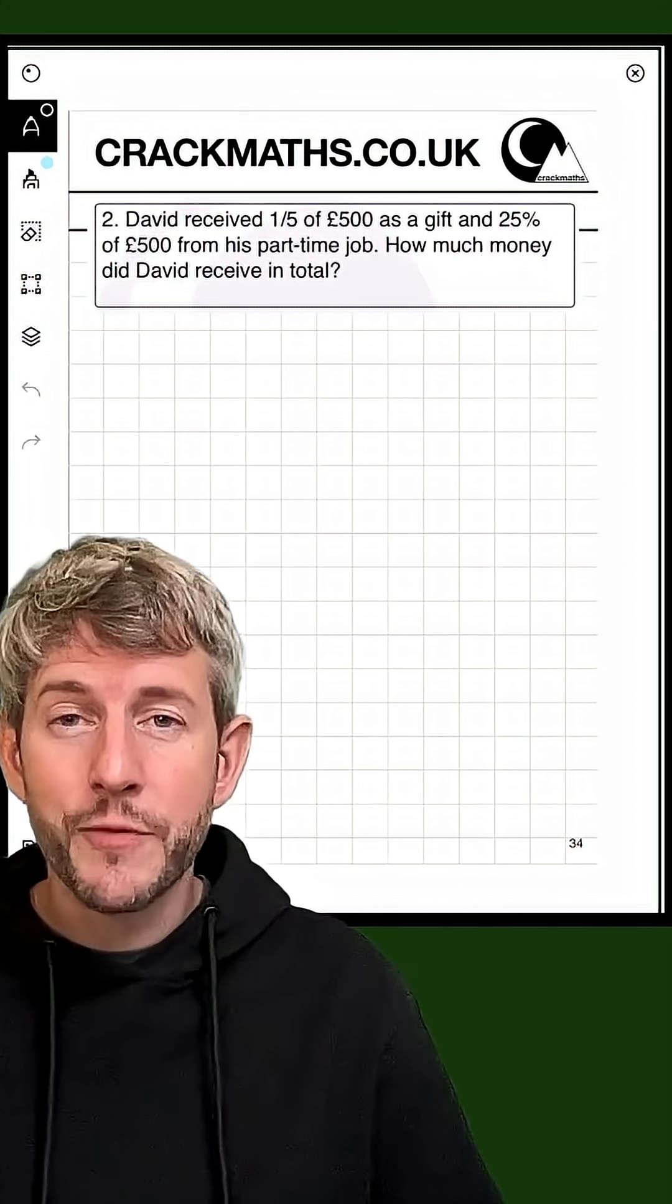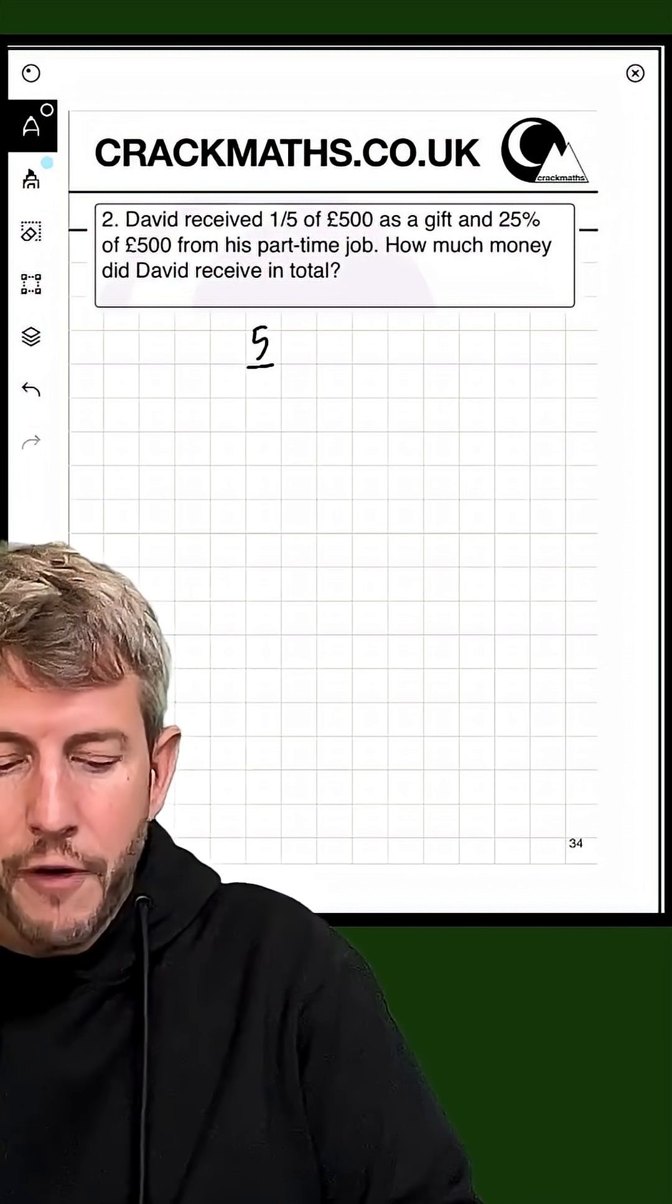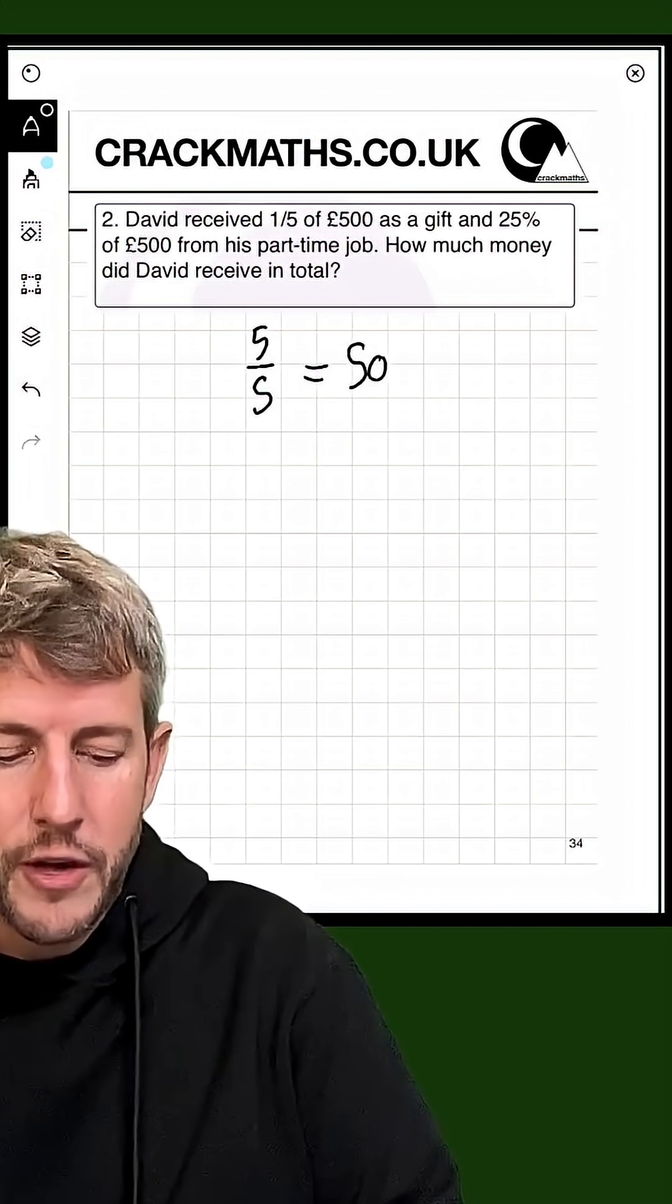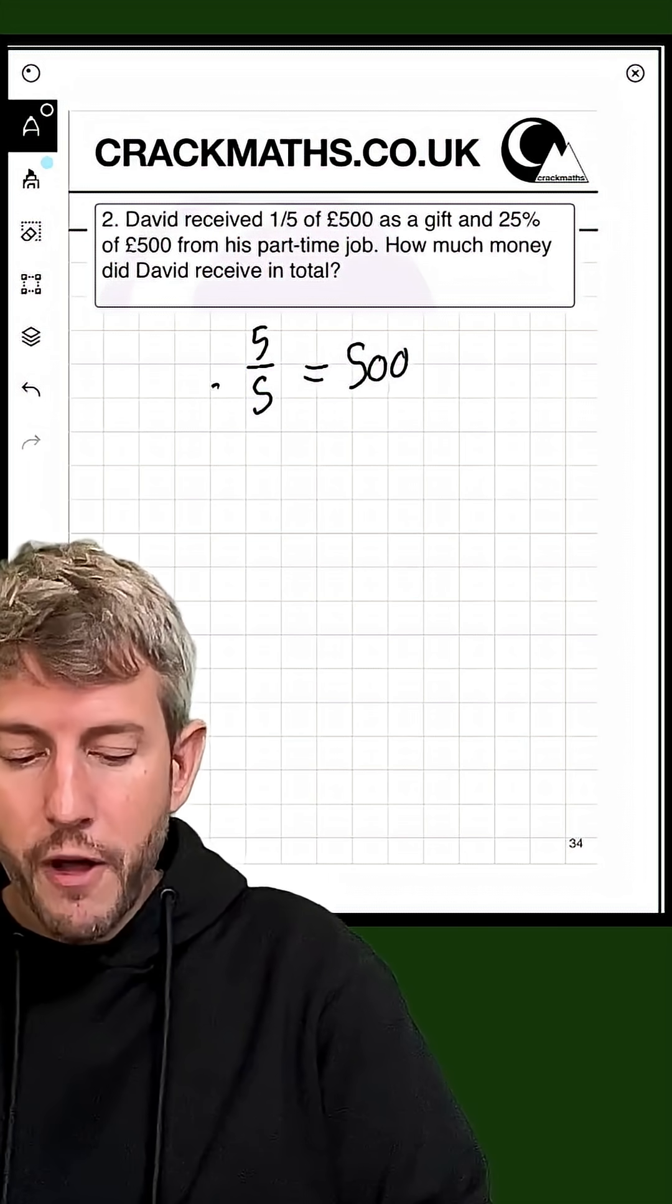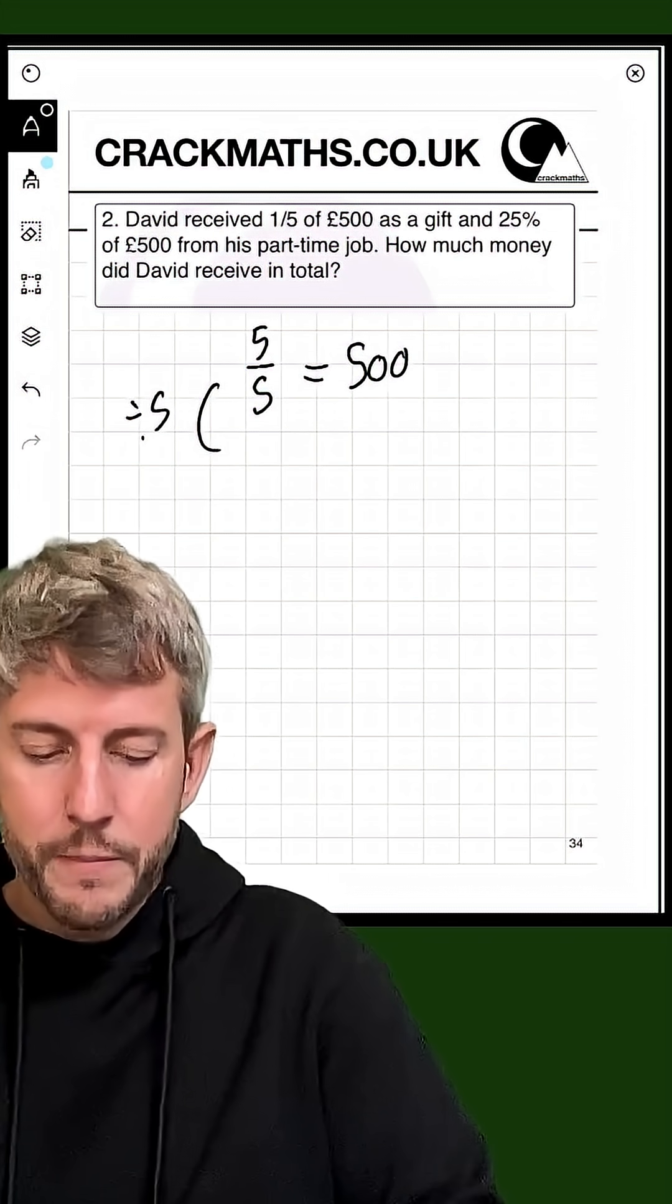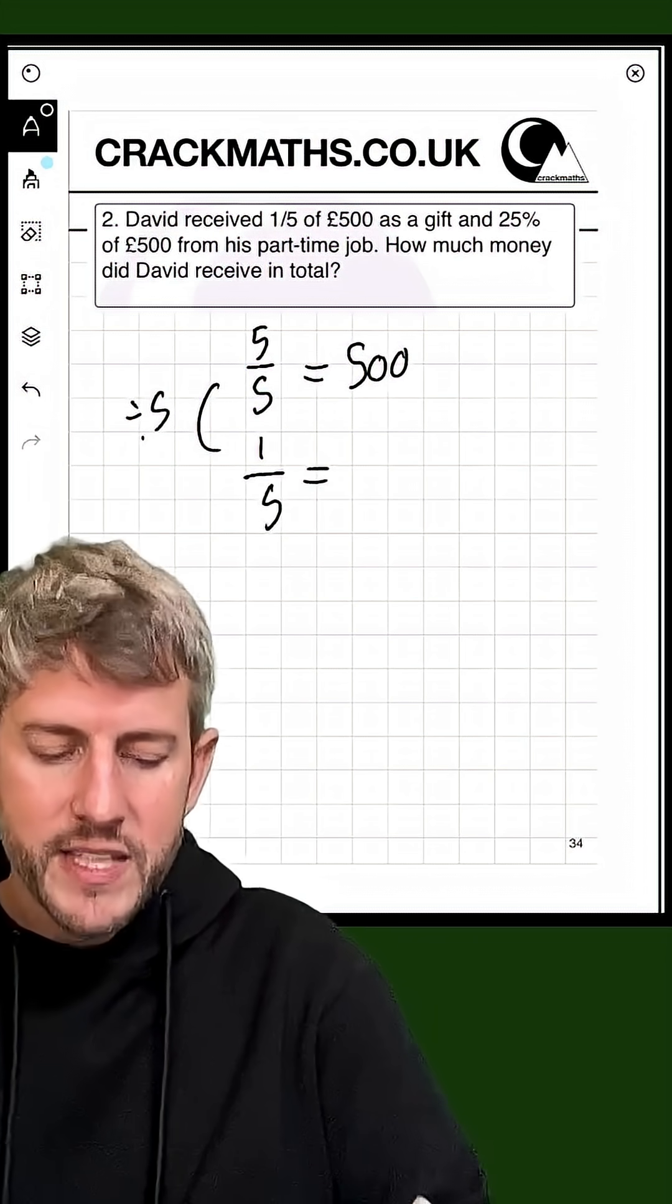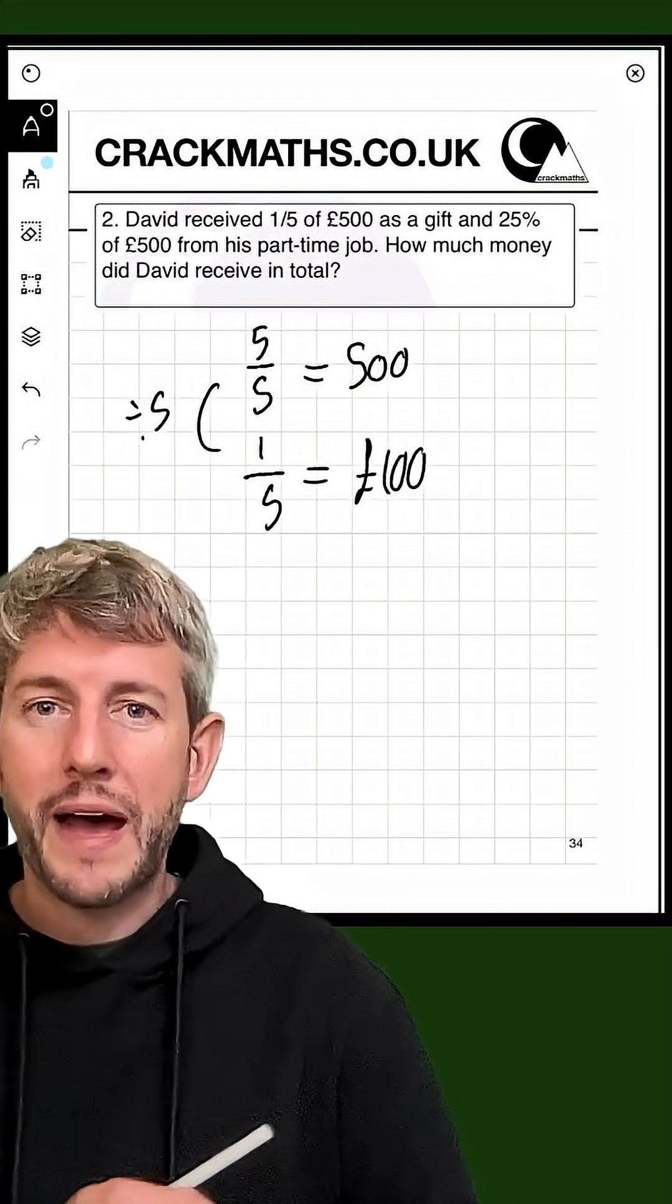So let's first of all do a fifth. So we know that five-fifths is the whole amount, so that is 500 pounds. Now to go from five-fifths to one-fifth, we simply divide by five. So we end up with one-fifth is going to be 100 pounds.